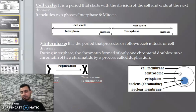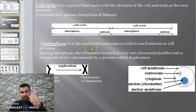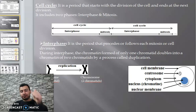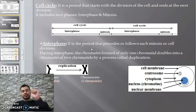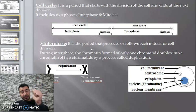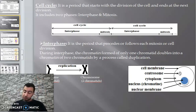Hello dear students. In the previous video we explained the meaning of the cell cycle. The cell cycle is made up of interphase and mitosis. Interphase includes G1, S, and G2. Mitosis includes prophase, metaphase, and telophase. During the S phase of interphase, the chromosome duplicates.